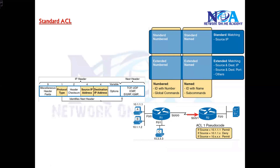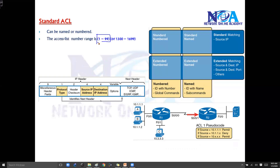First let's see the standard, basic ACL. The standard ACL can be named or numbered. You can identify it with either a name or a number. If you use any number between 1 to 99, the router will automatically understand it is a standard ACL. There is also an expanded range — you can use 1300 to 1699 in some newer IOS versions, and the router will again know it is a standard ACL.